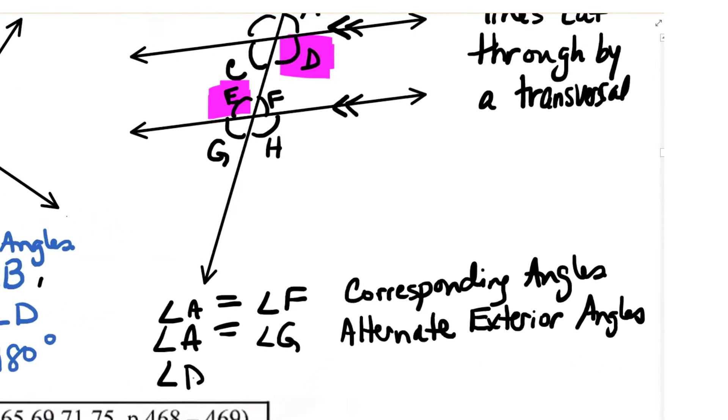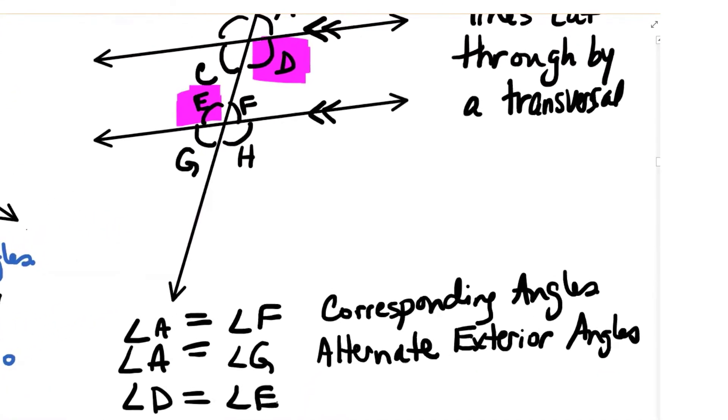So we could set up the equation angle D equals angle E as well because alternate interior angles that are on the inside of the two parallel lines are also equal.